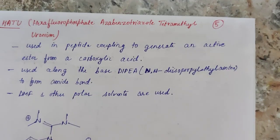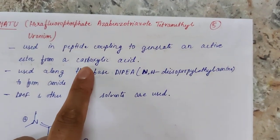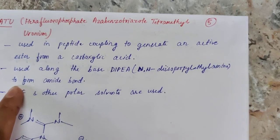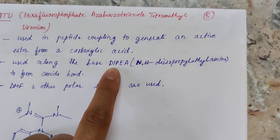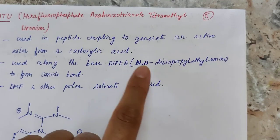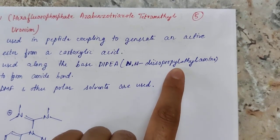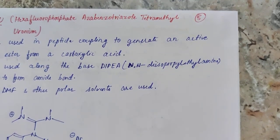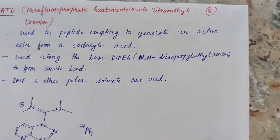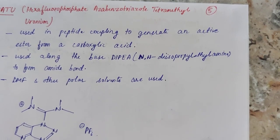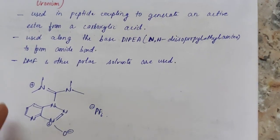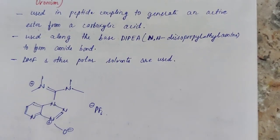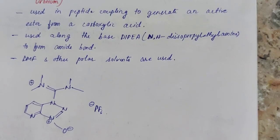HATU activates the carboxylic acid to facilitate formation of an active ester. It is used along with a base — specifically DIPEA (N,N-diisopropylethylamine) — to form the amide bond. The solvents used are DMF or other polar solvents such as dichloromethane.